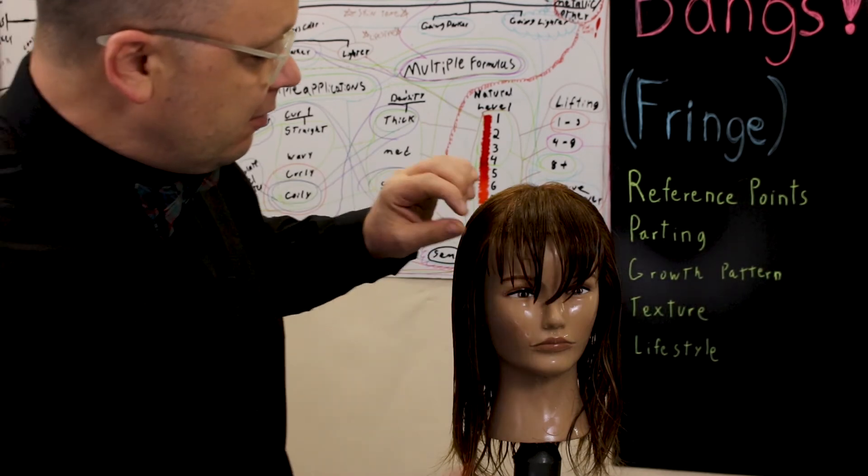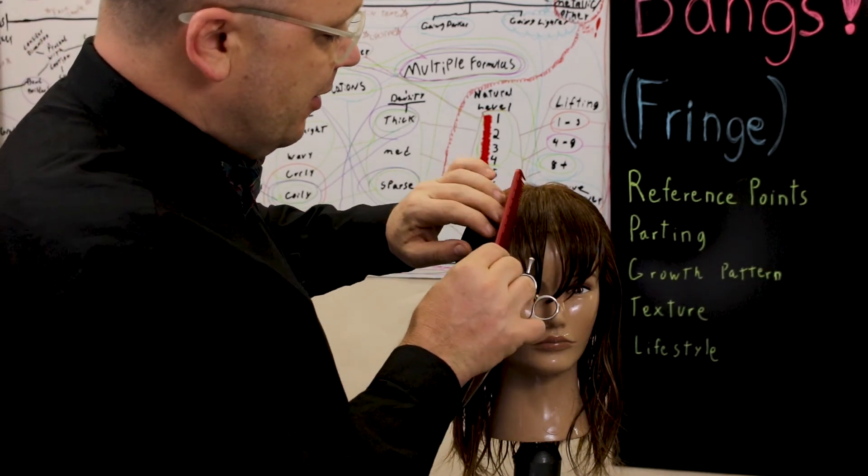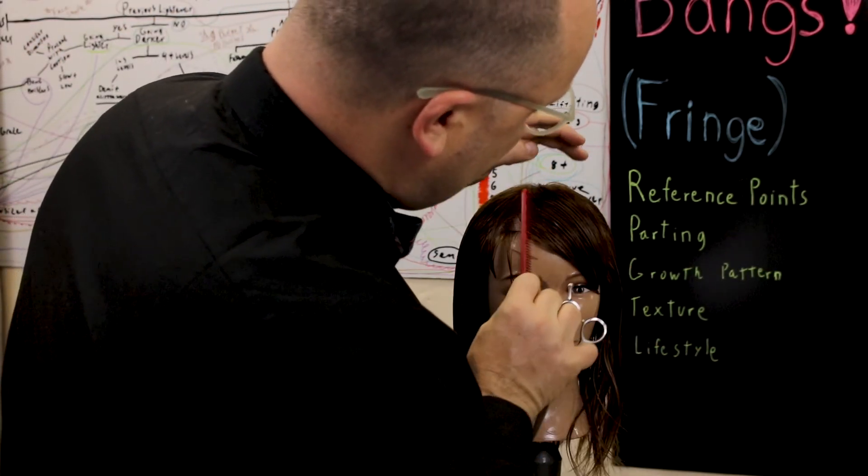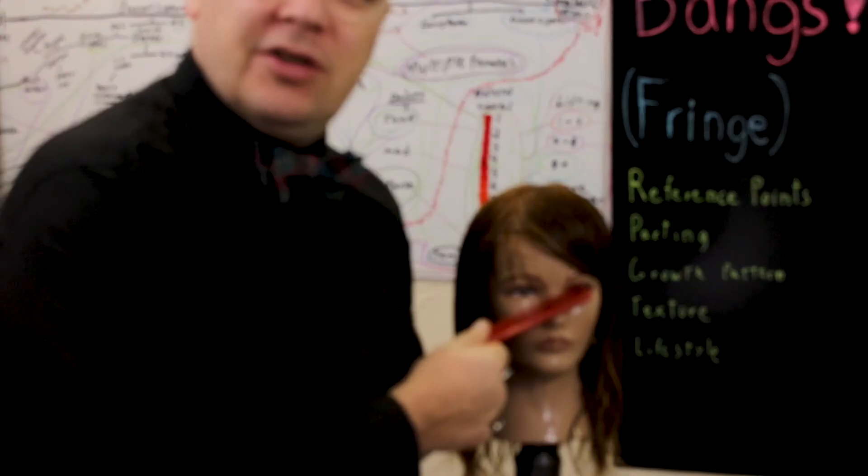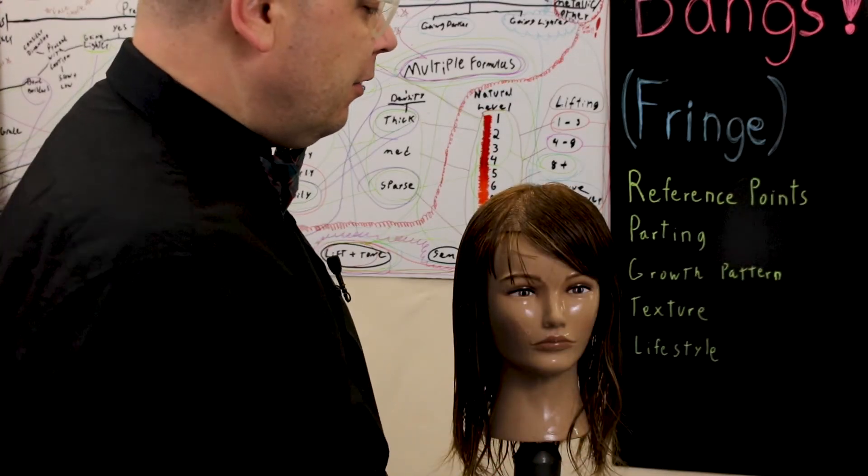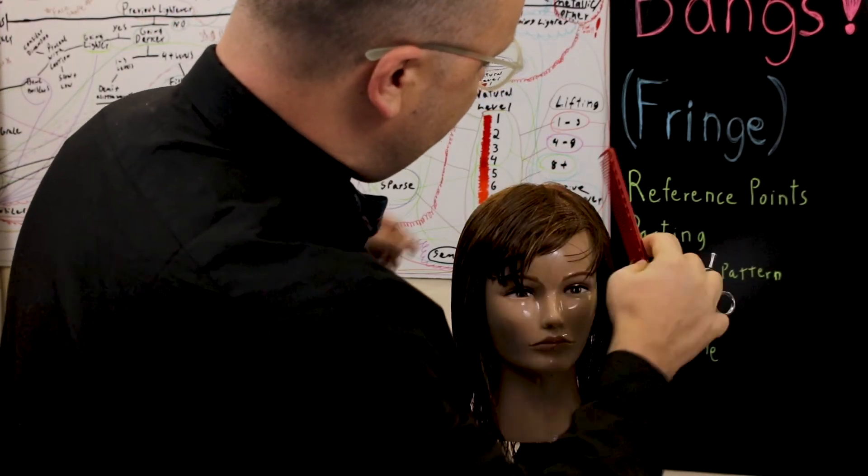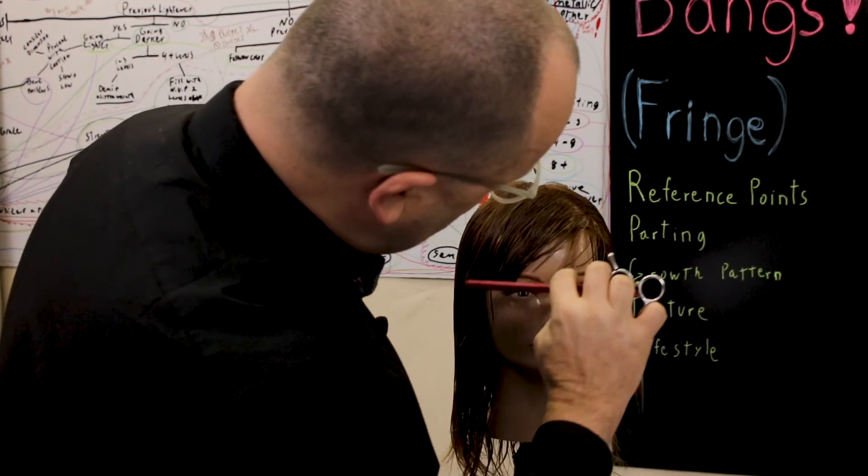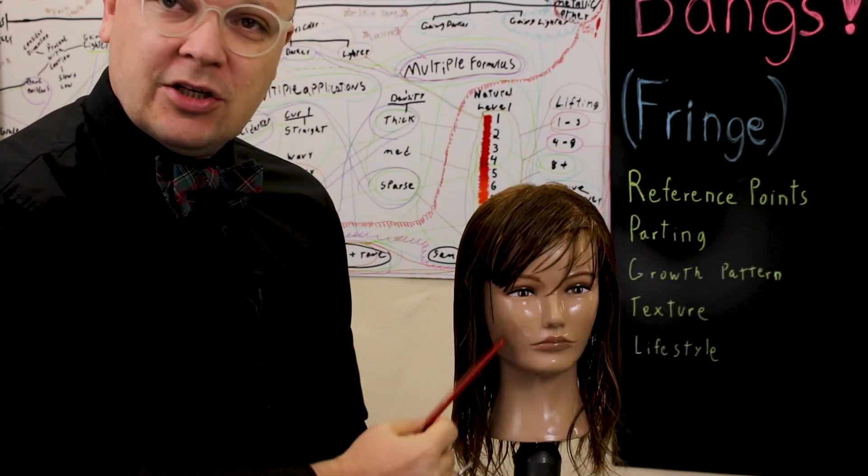Now that she's longest in the center, watch what happens. We part on the side, go this way, and she's got short to long. Part on the other side, and she's got short to long.